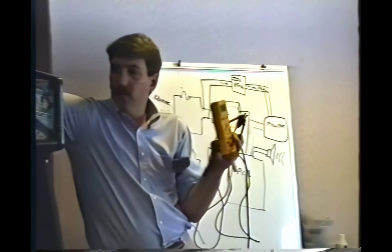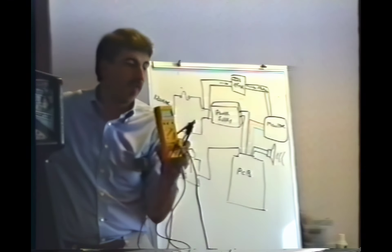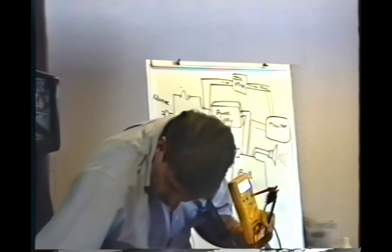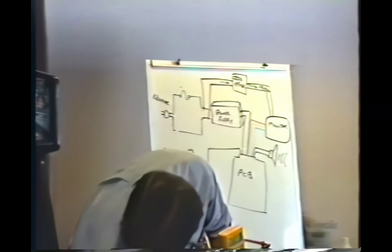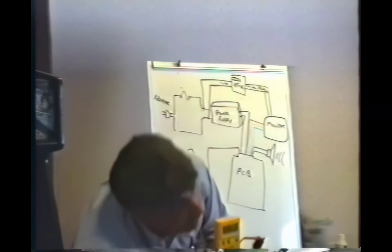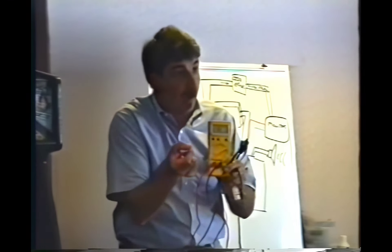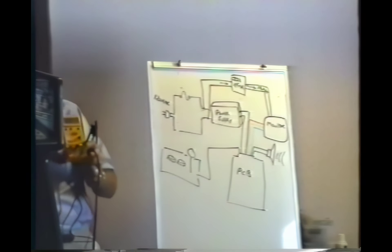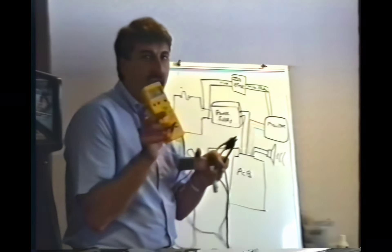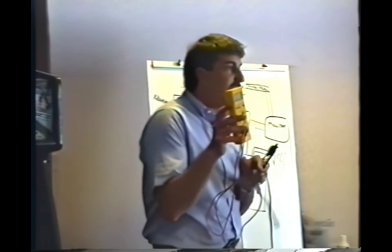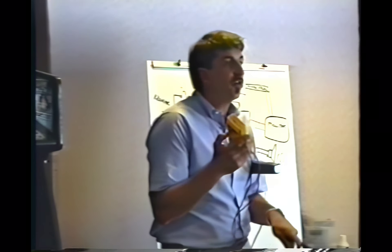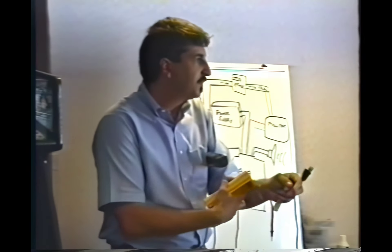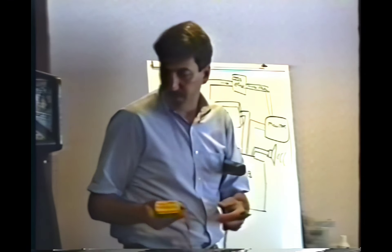There's nothing going on here. Make sure all the switches are on — there's an interlock switch in the front door and one in the back door. Are all the switches on? Yes, but I don't have any reading on this meter whatsoever. I've got a broken wire somewhere — something's broken, blown fuse, broken wire, something.